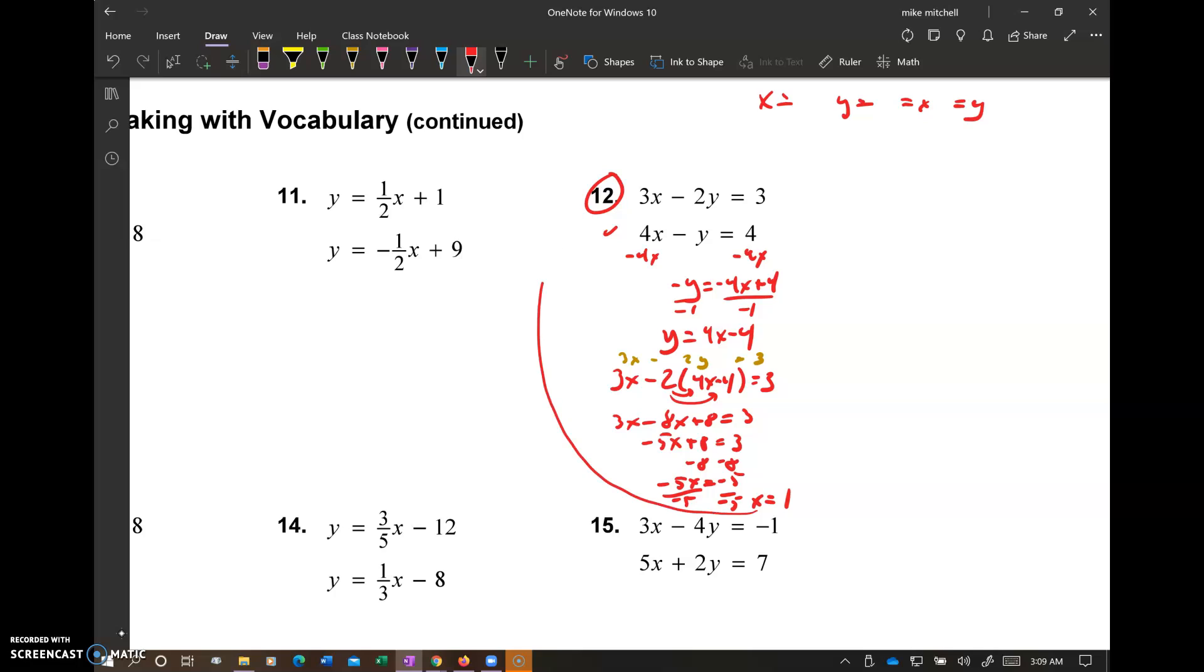I'm going to plug that back into one of my equations, so that's going to come back up here. I'm liking the one on the bottom a little bit easier, so that's going to be 4x, not 4x. Let's do 4 times 1 minus y equals 4. 4 minus y equals 4, minus 4, minus 4, negative y equals 0. I don't really have to do this step. You know it's going to come out to 0, so that gives me 1, 0 for my point.